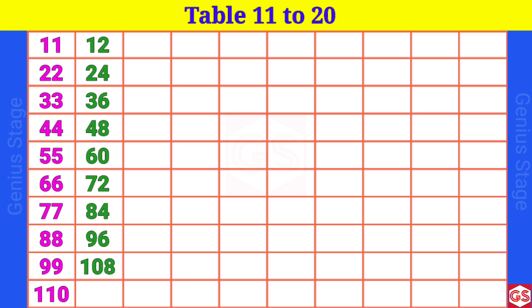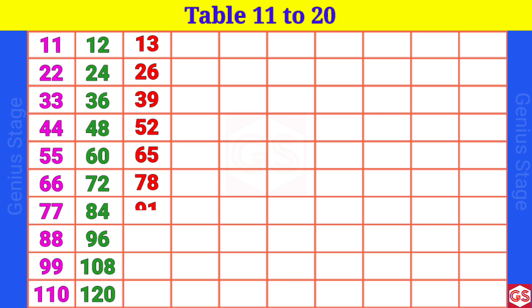12 10s are 120. 13 1s are 13, 13 2s are 26, 13 3s are 39, 13 4s are 52, 13 5s are 65, 13 6s are 78, 13 7s are 91, 13 8s are 104, 13 9s are 117.